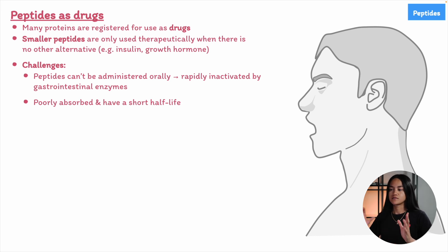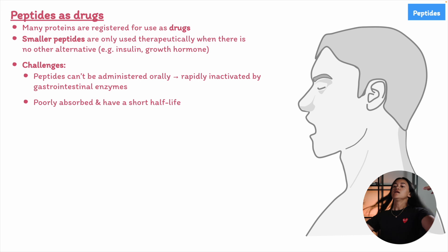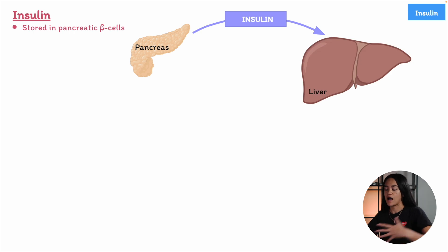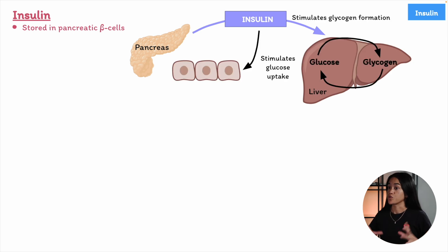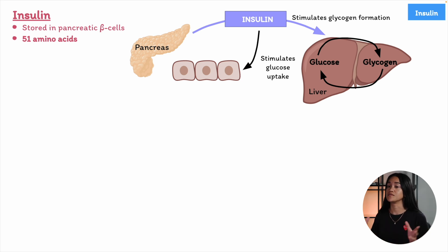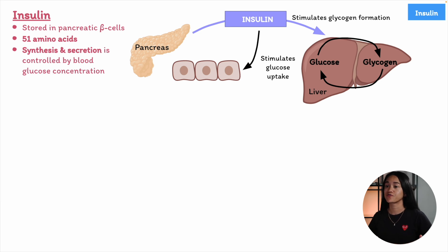Let's start with insulin. Insulin is a key peptide in the regulation of blood glucose levels. It is a hormone produced by beta cells in the pancreas, and its primary role is to help the body maintain stable blood glucose levels, ensuring that cells have the energy they need to function properly. Its synthesis and secretion are regulated by blood glucose levels and the rate at which blood glucose changes. It consists of 51 amino acids and is classified as a dimer with an A-chain and a B-chain connected by disulfide bonds. When we eat, glucose from food enters the bloodstream, and this triggers the pancreas to release insulin into the blood, which then acts on various tissues to regulate glucose levels.